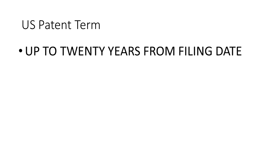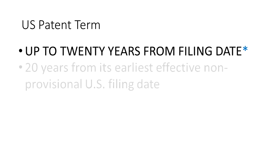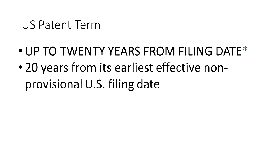How long do patents last? Basically, it's up to 20 years from the filing date — but we're going to put an asterisk there, because in certain cases it can go a little bit beyond 20 years, and we'll get into that in a few minutes. The clock actually starts from its earliest effective non-provisional U.S. filing date.